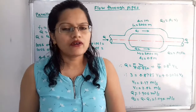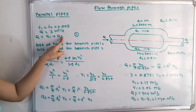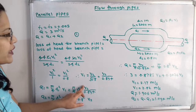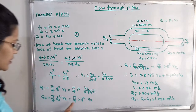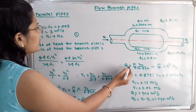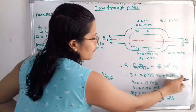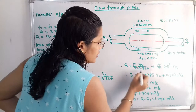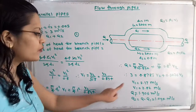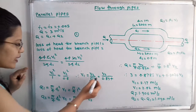Substituting into the continuity equation Q = Q1 + Q2: 3 = (π/4)·(V2/0.894) + (π/4)·0.8²·V2. Taking V2 as a common factor and solving this equation, we get V2 = 2.17 meters per second.